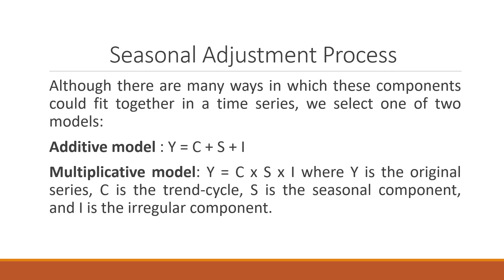There are two methods of the seasonal adjustment process: the additive model and the multiplicative model. The additive model is Y = C + S + I. The multiplicative model is Y = C × S × I. Where Y is the original series, C is the trend cycle, S is the seasonal component, and I is the irregular component.